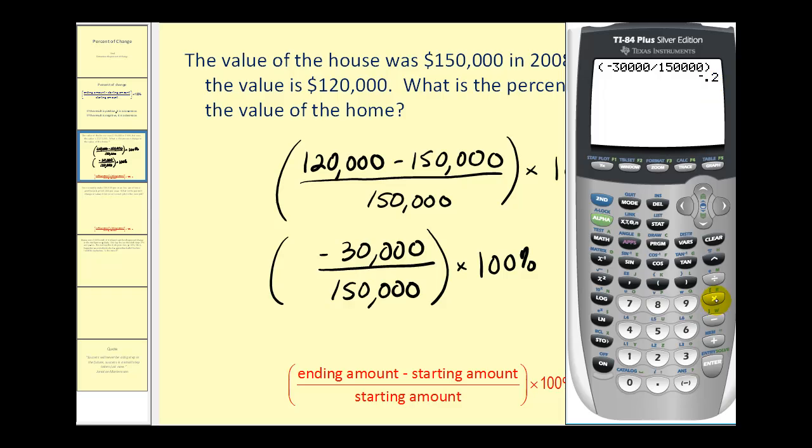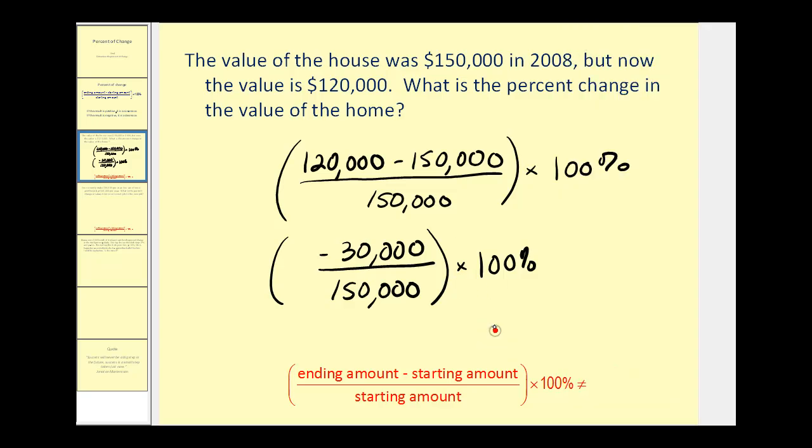To convert this decimal to a percent, we multiply it by 100 and add the percent symbol. So the percent of change is negative 20 percent, which means the value of the home has decreased by 20 percent since 2008.